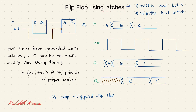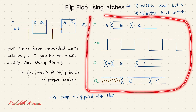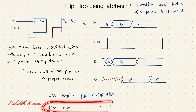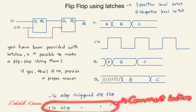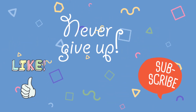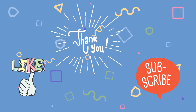I hope the concept is clear. You can draw your own timing diagram and practice. I have explained how to make a negative edge-triggered flip-flop using latches. The homework question is: how do you make a positive edge-triggered flip-flop? Try to solve this and post your answer in the comment section. That's it guys, see you with the next question — thank you!